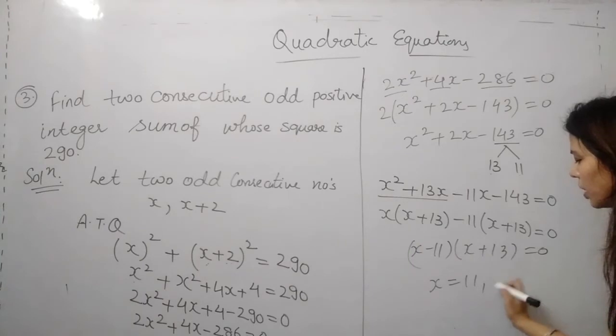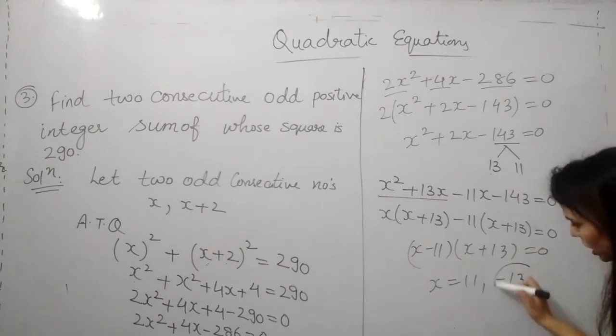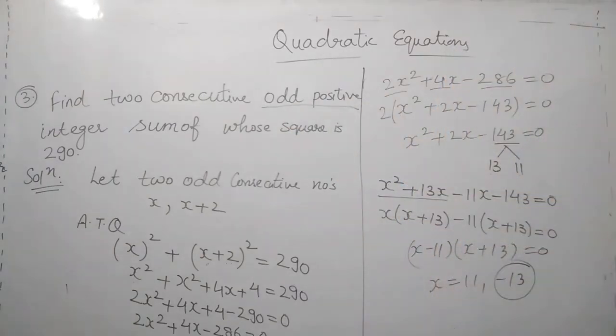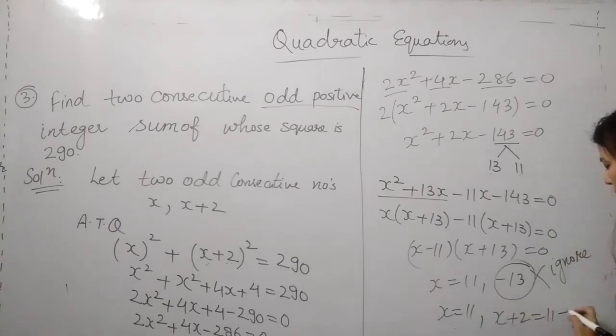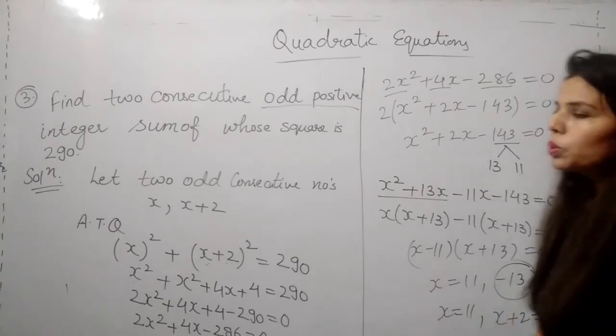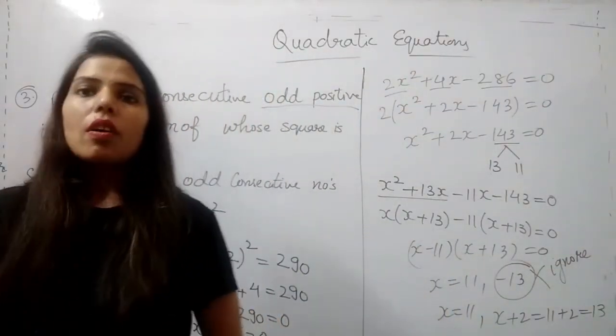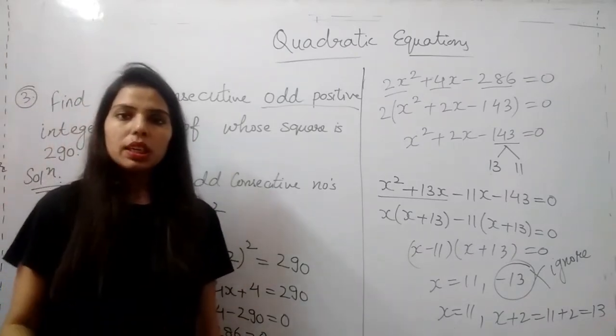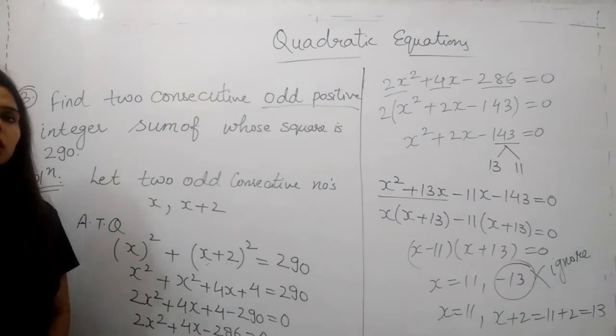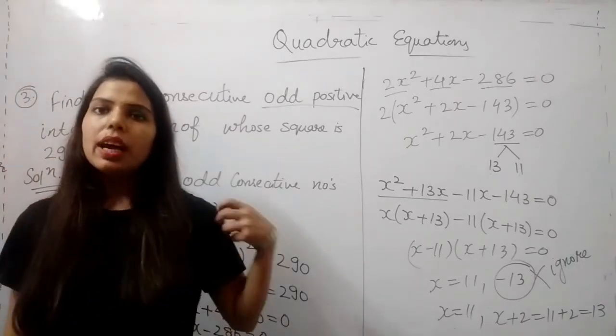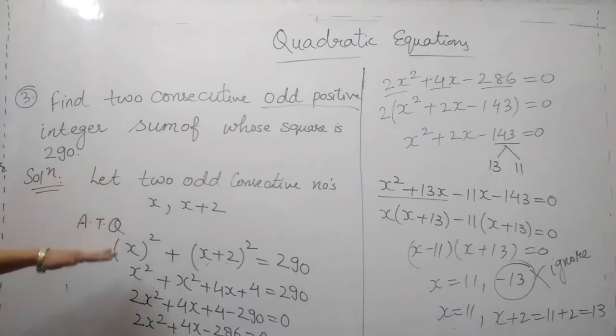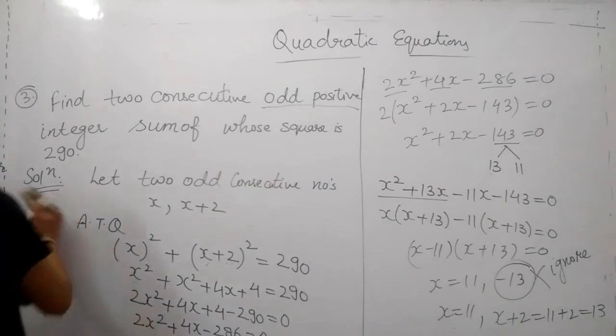That is either x equal to 11 or minus 13. As the question was about positive integer, we will ignore this value. From here we got x as 11. Our next number is x plus 2 that is 11 plus 2, that is 13. So 2 numbers 11 and 13 consecutive whose square sum is 290. This is number related problems which we have solved using quadratic equations. Firstly we framed the quadratic equation then we have solved it using splitting the middle term.